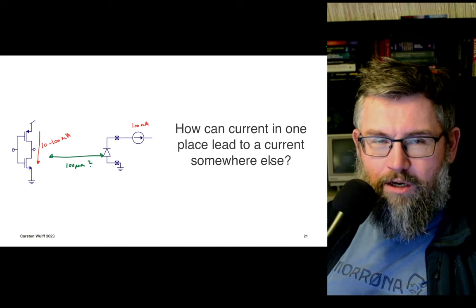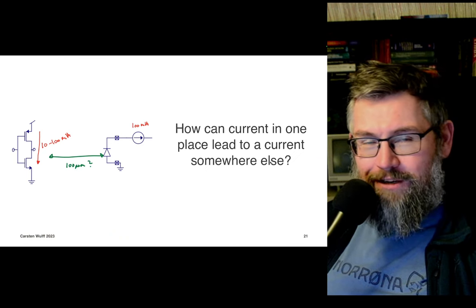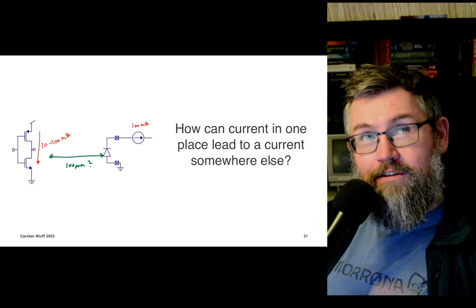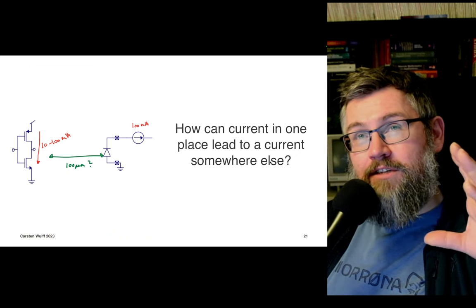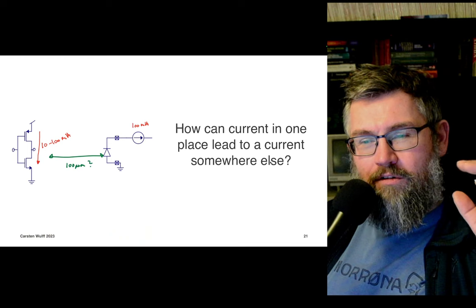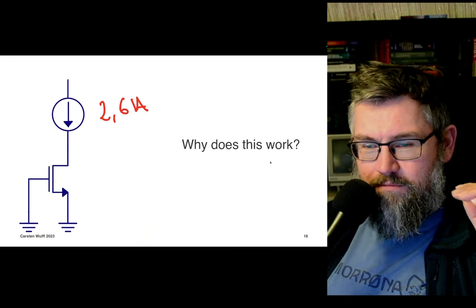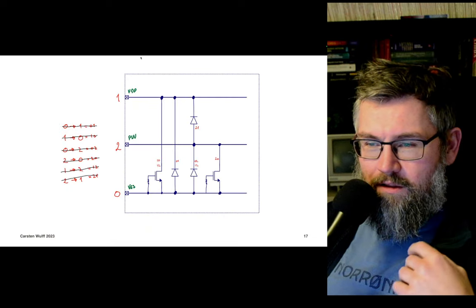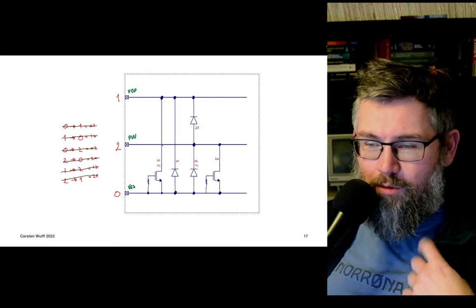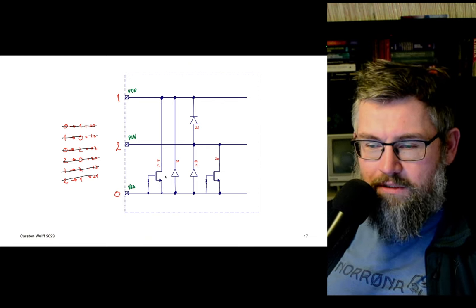If you do the layout right, then the grounded gate NMOS is a good way to protect or create something that can short the current from VDD to ground when this VDD is too high. Because normally this avalanche condition doesn't happen, so this transistor doesn't turn on.